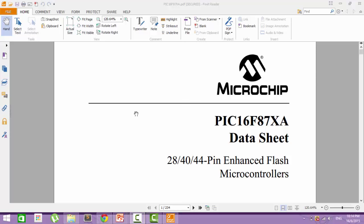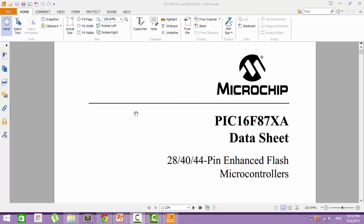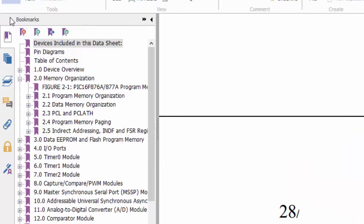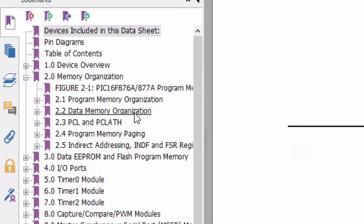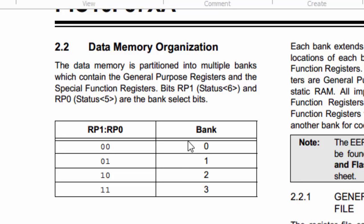Let me pull up the PIC16F87XA datasheet and show you what I meant about the banks when it comes to data memory. Let's go to memory organization, then data memory organization. As you can see here, there are four banks — bank 0 to bank 3 — and this is the special function register used to access the bank. So if we set the SFR to 00, we are accessing bank 0, and so on and so forth.